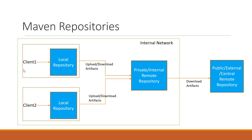So what are the types of repositories we have? We have a local repository and a remote repository. The local repository is a repository on the machine in which we execute Maven commands. For example, we have a client-1 machine and a client-2 machine. In the client-1 machine, if I build an application with the pom.xml, first it will search the local repository for the dependencies. If it is not able to find the corresponding dependencies in the local repository, then it will download them from the remote repository. When we build the application, the built artifacts will be stored in the local repository of the client-1 machine.